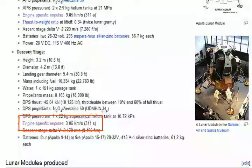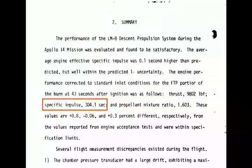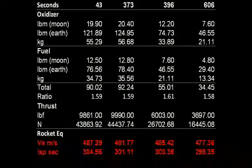Wikipedia, for example. Another good source, and a little more original, is the DPS performance reports that were filed after each mission. Take this report for the Apollo 14, for example. There's even a table of performance data in the middle of the report that lists the specific impulse at four different times during the descent.